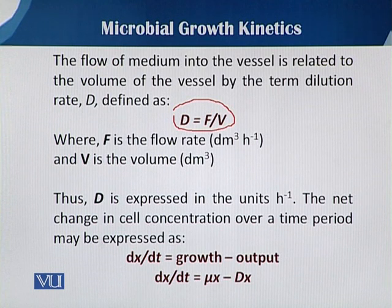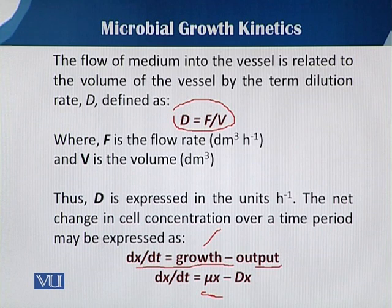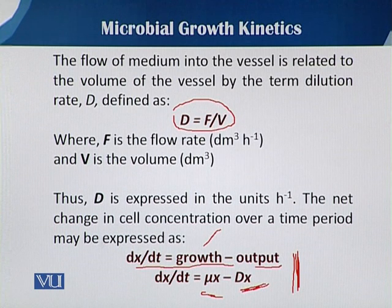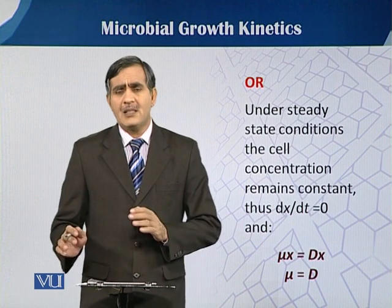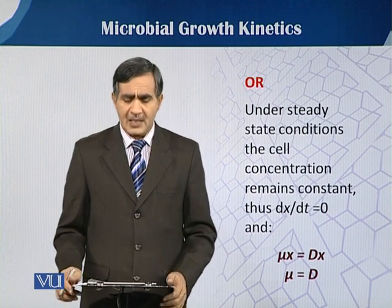The net change in cell concentration over time in the fermentation vessel can be expressed as dx/dt, where growth equals mu·x. In continuous culture we are harvesting something — extracting biomass from the vessel — so this equation describes how biomass concentration exists in the fermentation vessel while running continuous culture. When the dilution rate equals the specific growth rate, steady state is achieved.